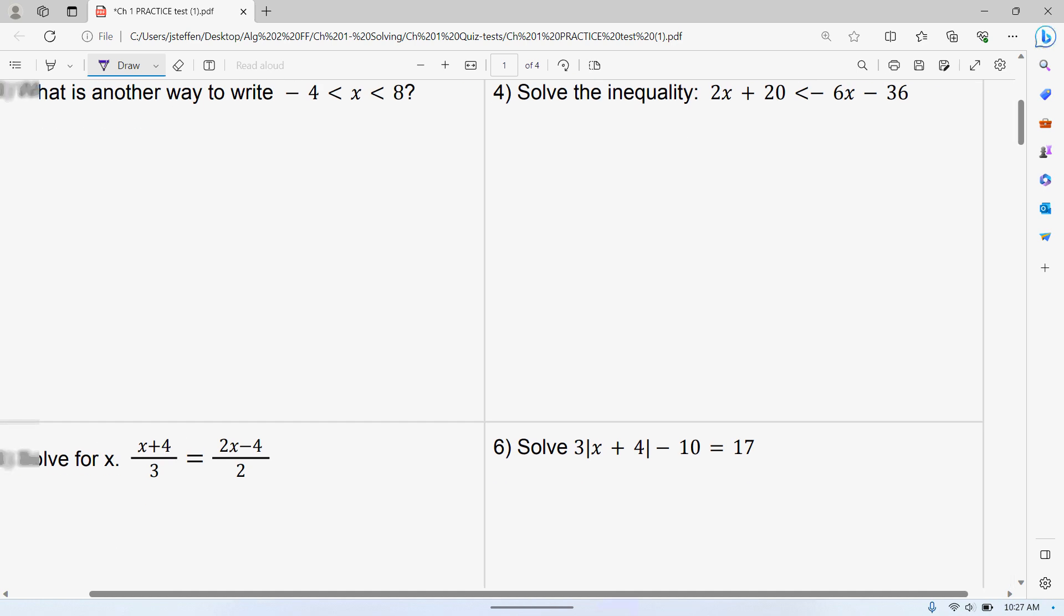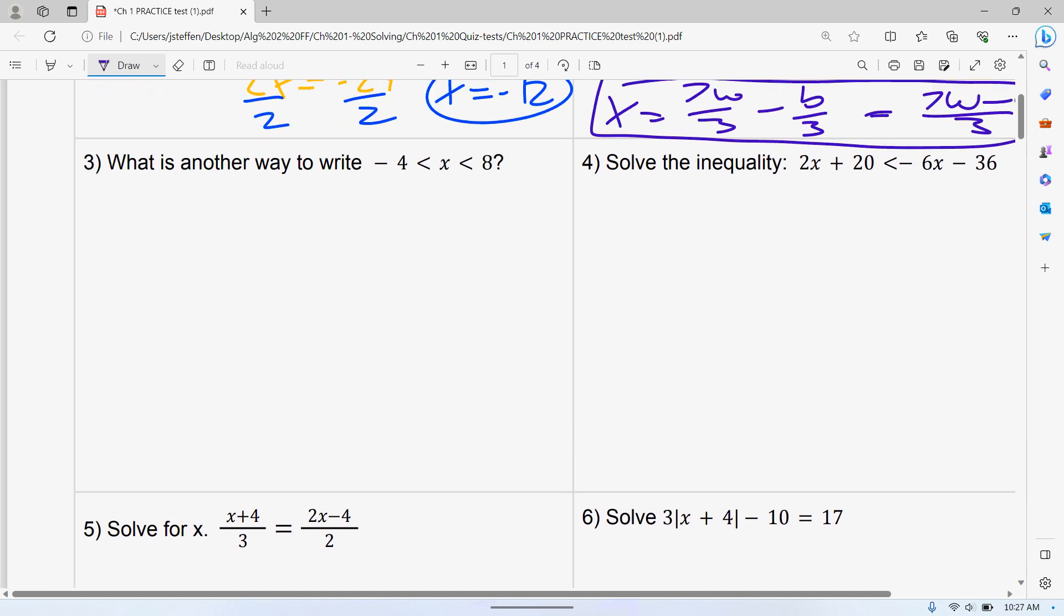Number three, what is another way to write negative four is less than X is less than eight? Basically, I want to make sure you know that having X first, so X is greater than negative four. It's the order of that sign that's the switch. Because negative four is smaller than X, that means X is bigger than negative four. So this is what I'm thinking is going to be on the test.